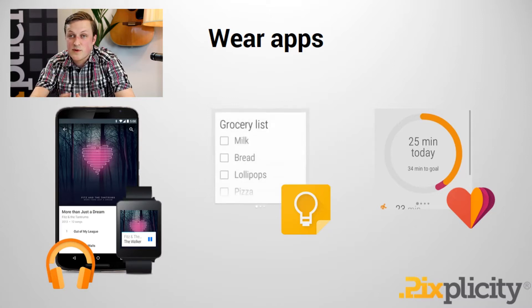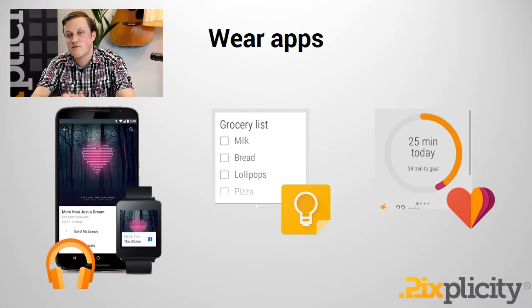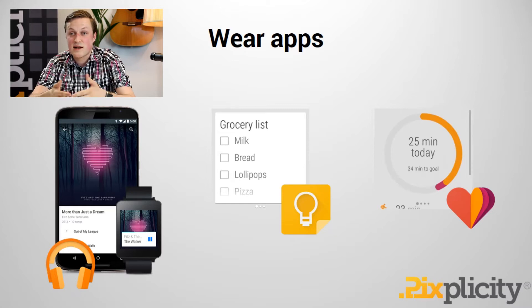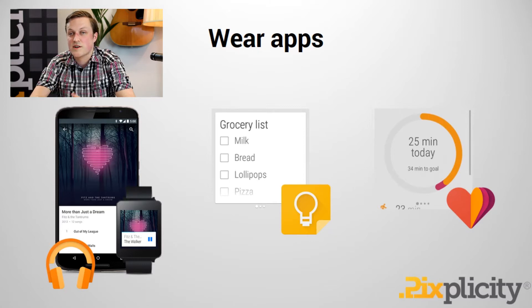Google Keep is a great example of using an always-on screen, so when you're walking through the supermarket gathering groceries you don't have to be afraid that the application closes. And finally, Google Fit combines fitness tracking with an efficient and really pleasurable interface so you can see your fitness history on your watch.